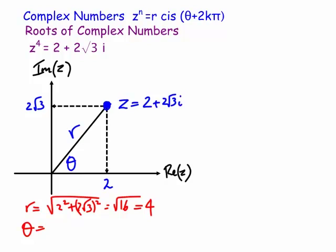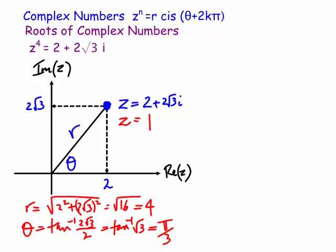For the argument θ, we use θ = arctan(y/x) = arctan(2√3 / 2) = arctan(√3) = π/3. So z in polar form is 4 cis(π/3), where π/3 is the principal argument.